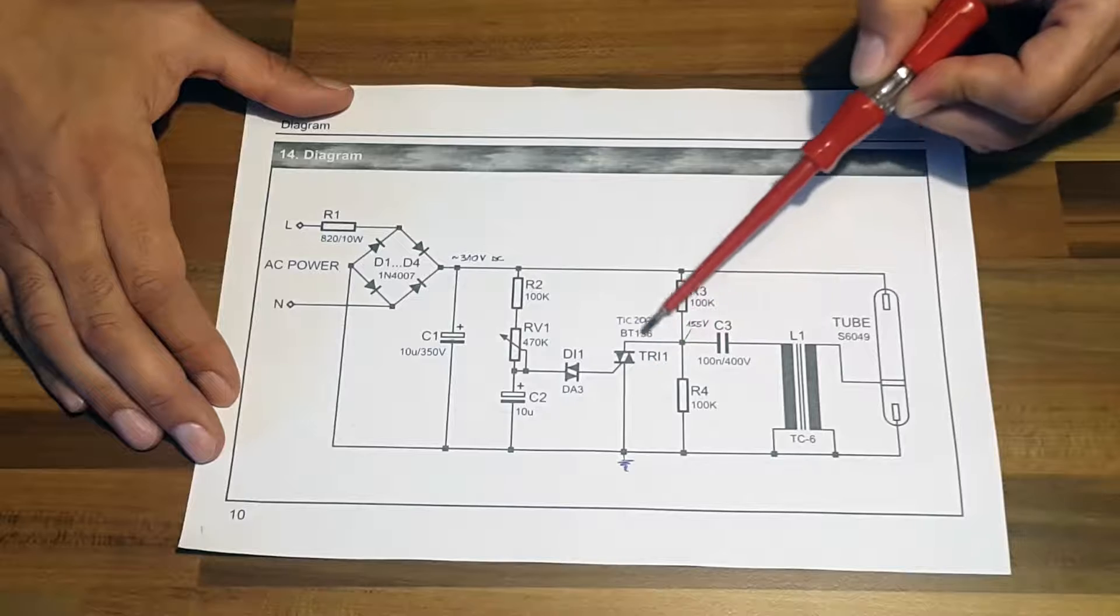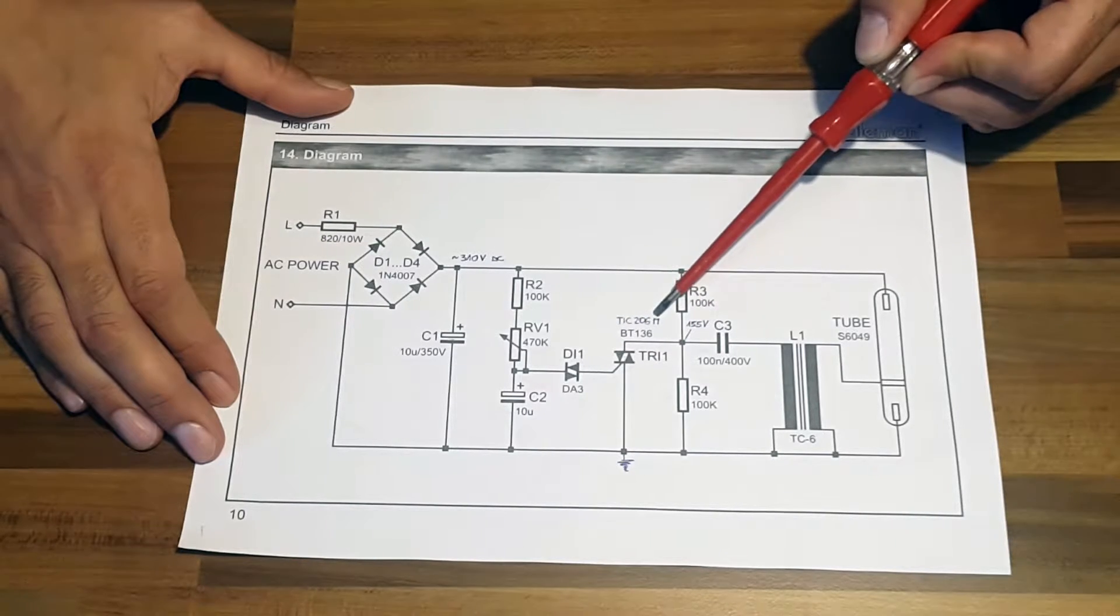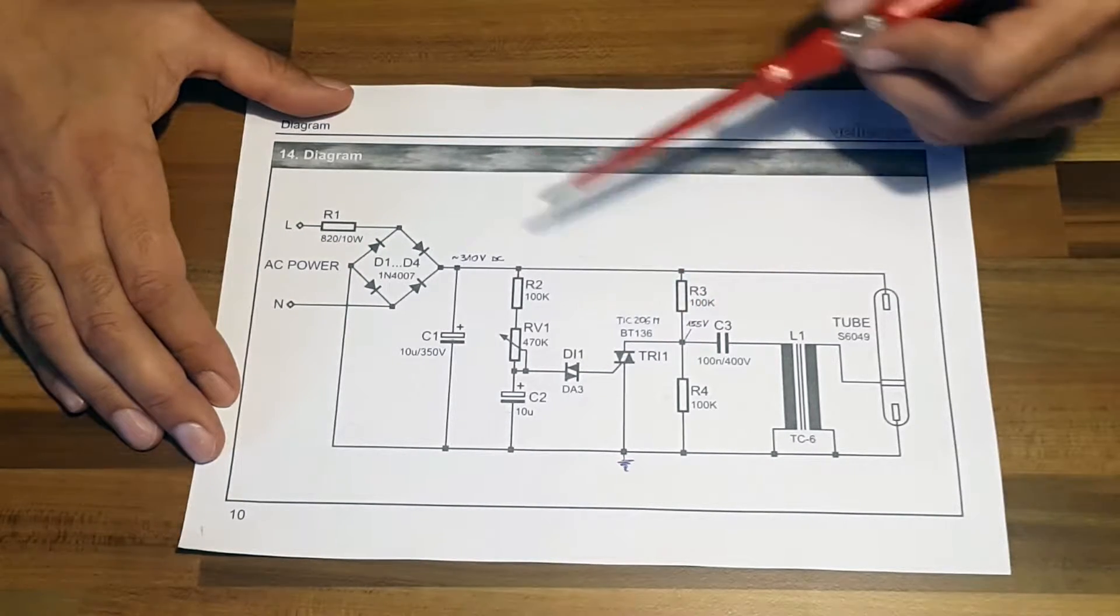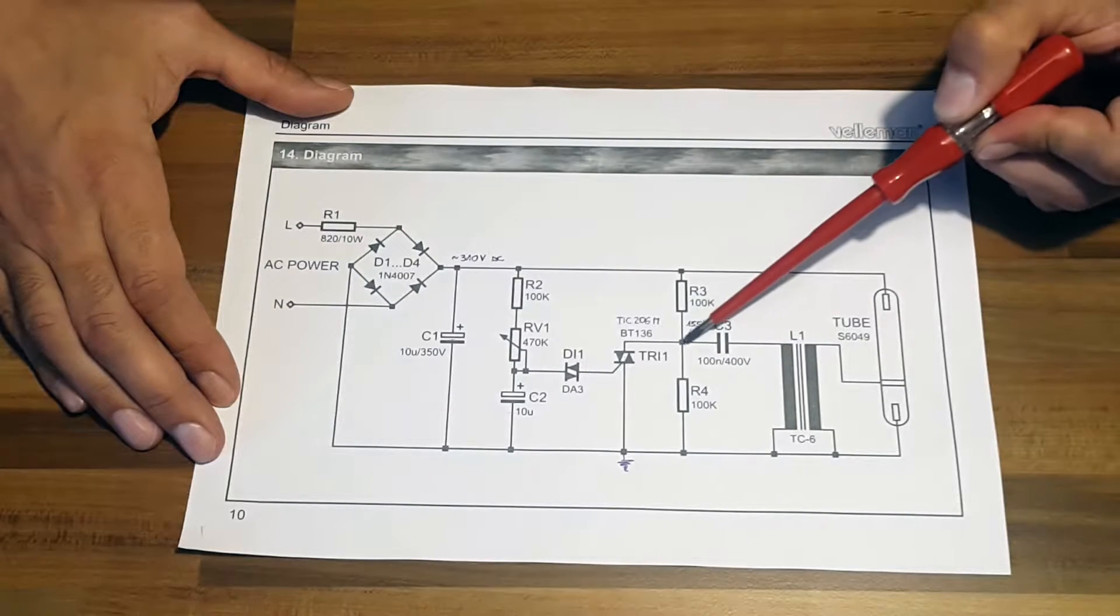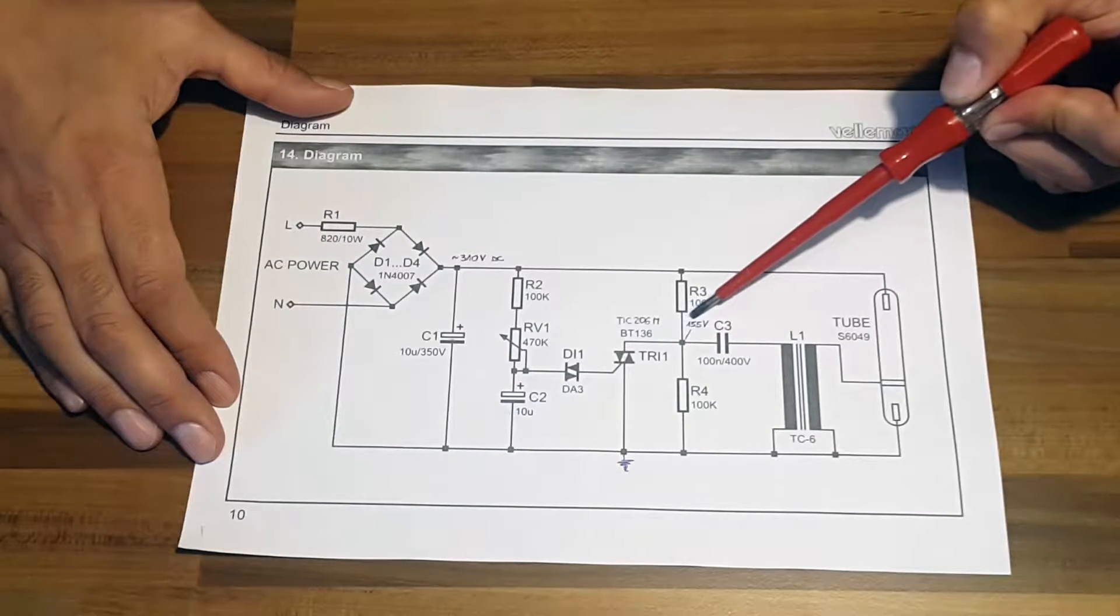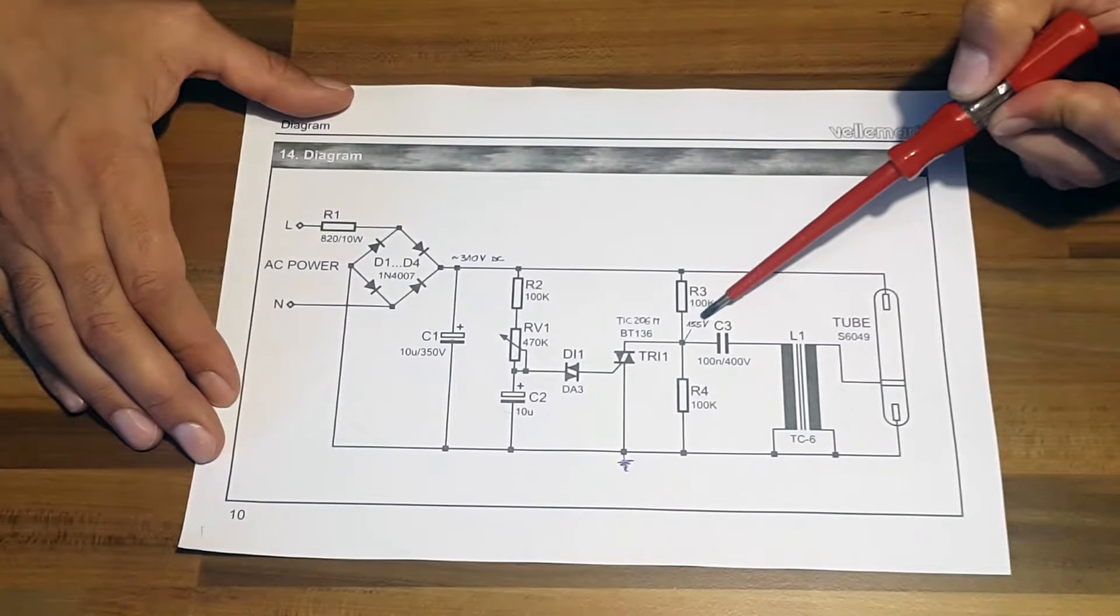It triggers triac TR1 which is TIC206M. The R3 and R4 make a voltage divider. As they are equal, the voltage in between is around 155 volts.